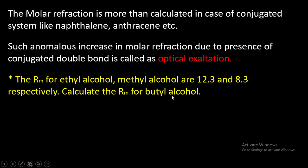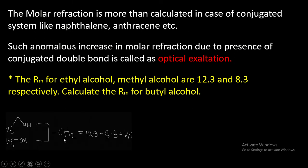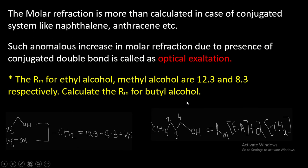The molar refractivity for ethyl alcohol and methyl chloride are 12.3 and 8.3 respectively. To calculate the molar refractivity for butyl alcohol: ethyl alcohol and methyl chloride differ by only a CH₂ group, so the molar refractivity of ethyl alcohol minus that of methyl chloride equals 4.6. Butyl alcohol contains four carbons and ethyl alcohol contains two carbons, so the difference is two CH₂ groups. Therefore molar refractivity of butyl alcohol equals molar refractivity of ethyl alcohol plus 2 × 4.6.